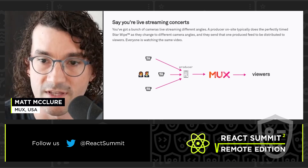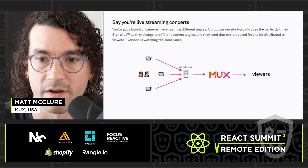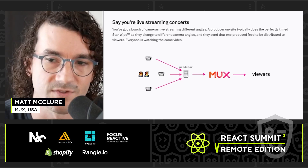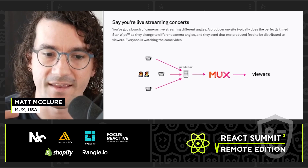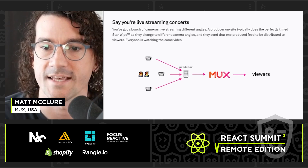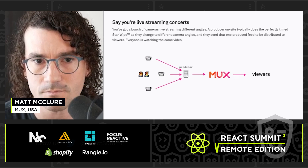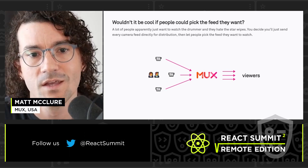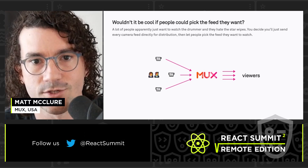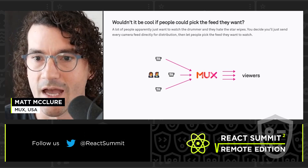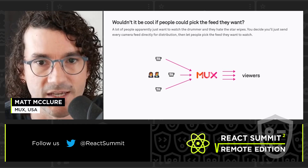That producer then sends a feed to an encoder service — or whatever else that looks like. I'm using Mux as an example here for obvious reasons. But then that service broadcasts that to all of your end viewers. So then those viewers start saying, actually, I just want to watch the drummer all the time, and I hate the transitions that this producer is doing.